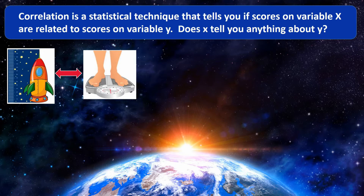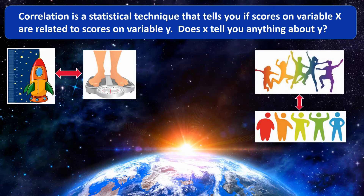As another example, there is a relationship between how much you exercise and how much you weigh. In general, the more you exercise, the more calories you burn and the less you weigh. We could also say it the other way: lighter people tend to exercise more. But there are some variables where we cannot measure the relationship using linear correlation.